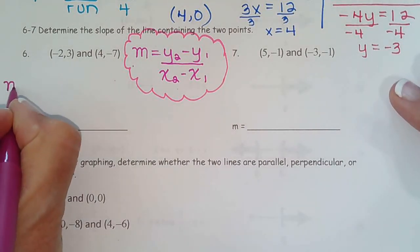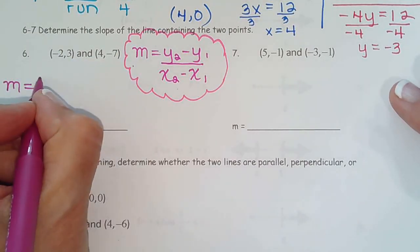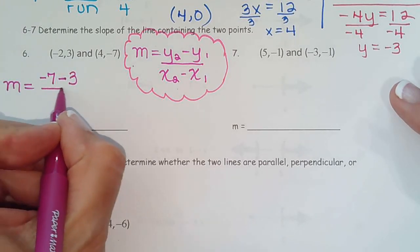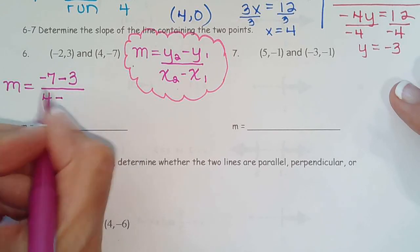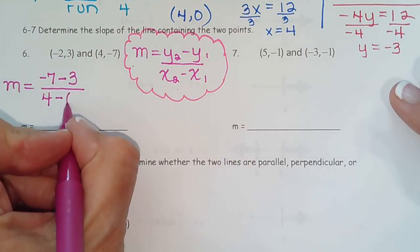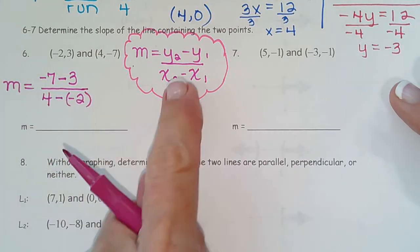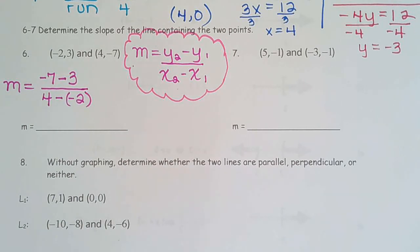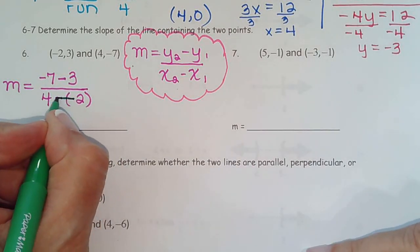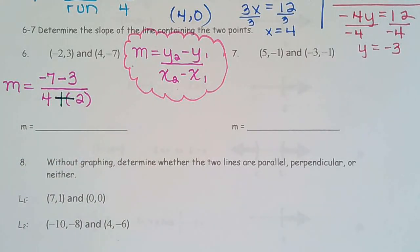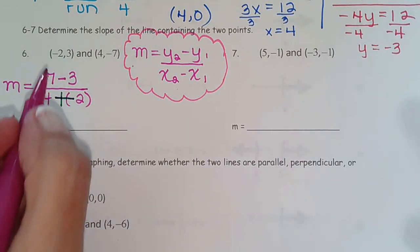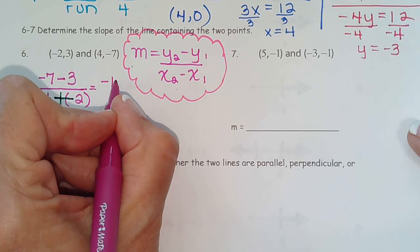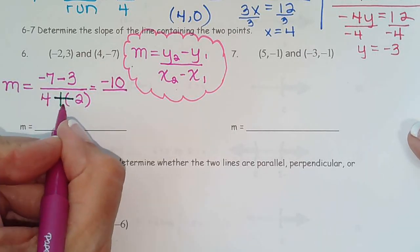Okay, so we have m equals second y, negative 7, minus the first y, 3, over second x, 4, minus from the formula, the first x, negative 2. So we have a double negative going on there because a minus from the formula and then we are subtracting a negative. So the first thing we want to do there is make that double negative positive. Don't do any work before you change that sign. That should be number 1. Negative 7 and negative 3. Negative 7 plus negative 3 or negative 7 minus 3 is negative 10. 4 plus 2 is 6.